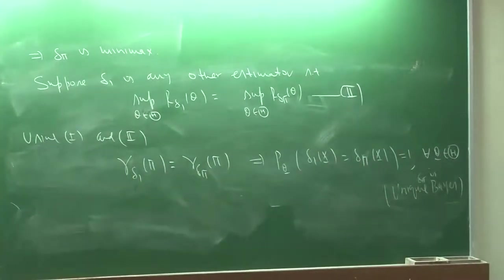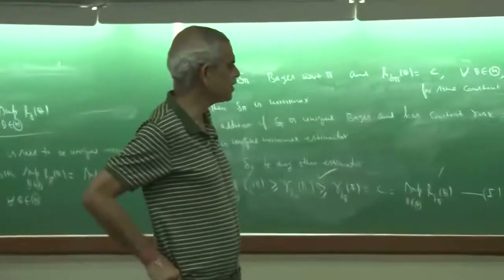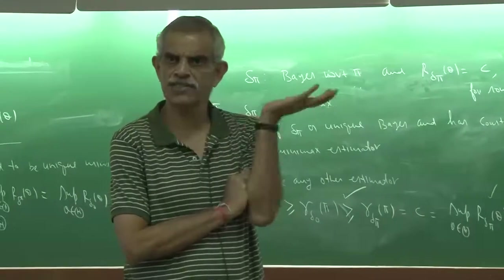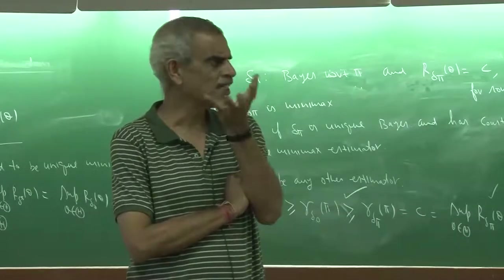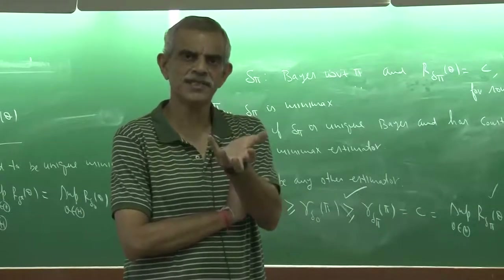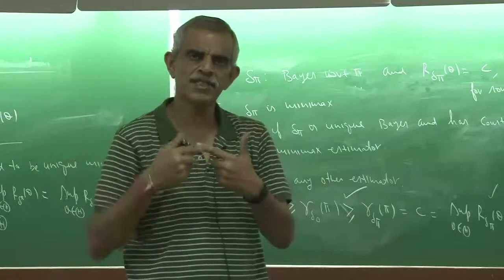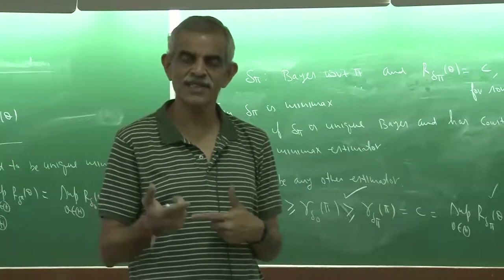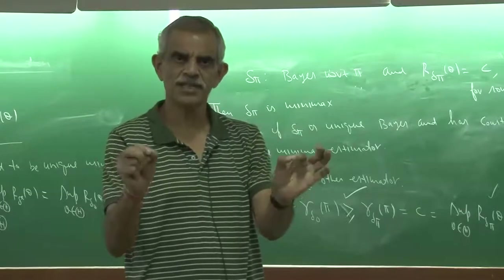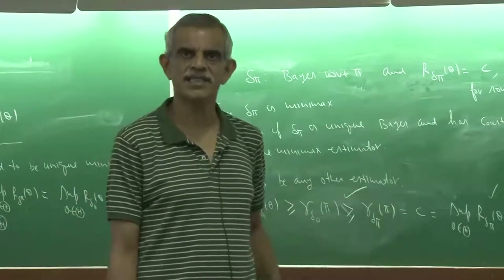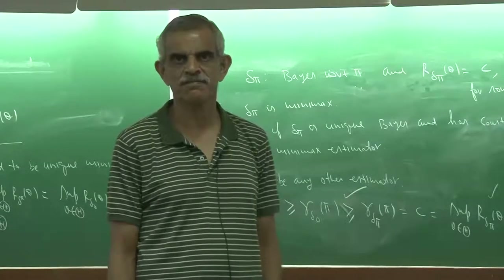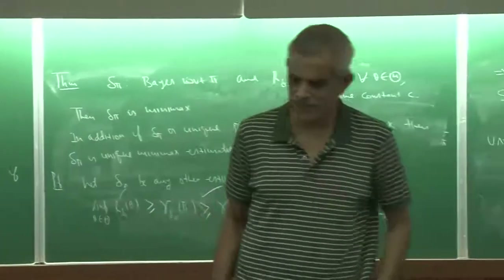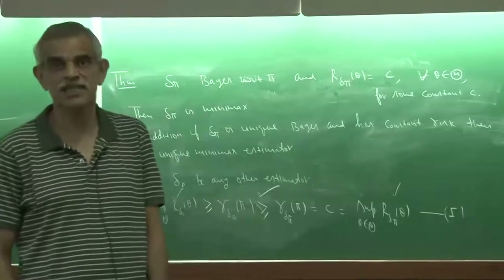This result can be used in many situations. What you try to do is first find a Bayes rule with respect to a class of distributions — a prior family with certain parameters, say alpha and beta. Then find the Bayes estimator in terms of alpha and beta, compute its frequentist risk, and play around with alpha and beta so that the risk becomes constant. If you can find such parameters, you have a Bayes estimator with a constant risk, which by this result would be Minimax — and in fact, unique Minimax in certain situations.